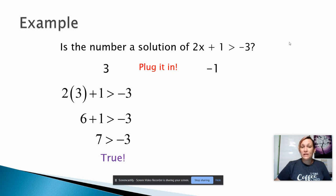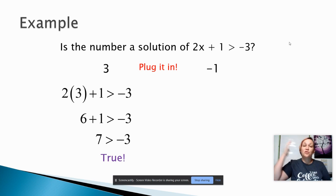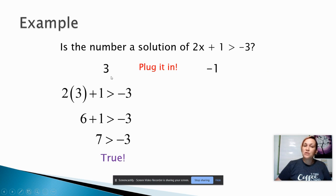Now, inequalities are kind of special because they don't have just one answer. It's not like an equation where you get x equals 3 and that's the only answer and you're done. So it's really important that even if the first one is true, you always have to try the second one as well, because the second one might also be true.